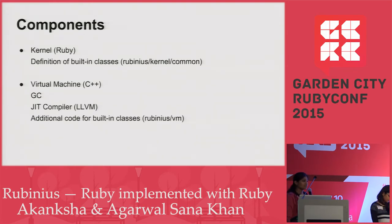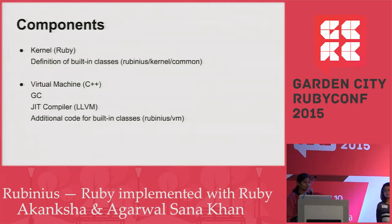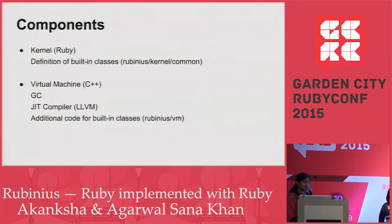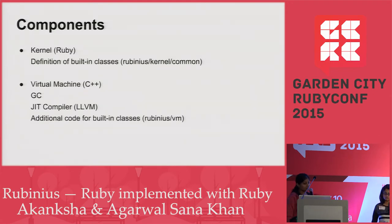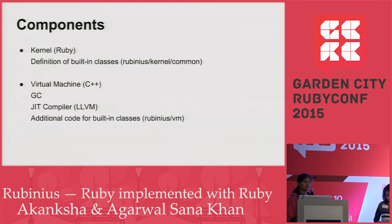Rubinius consists of two major components. First is the kernel and the second is the virtual machine. The Rubinius kernel is entirely written in Ruby and consists of built-in classes, all written in Ruby. The virtual machine consists of a garbage collector, a JIT compiler, and additional code for built-in classes.